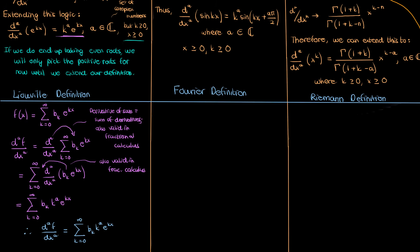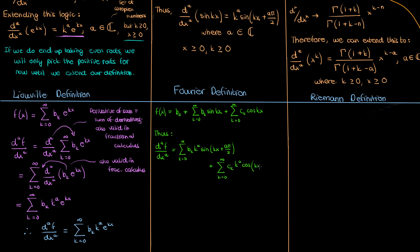Let's now elaborate on the Fourier definition of the fractional derivative. We express f of x as a sum of a constant b0, a sine series, and a cosine series — this is the whole point behind Fourier series. Using the same algebra as with the Liouville definition and substituting the fractional derivative of sine, we can write the fractional derivative of f of x according to the Fourier definition. The fractional derivative of cosine follows the exact same logic, just shifted slightly.